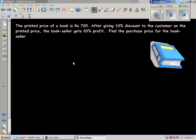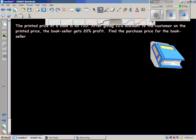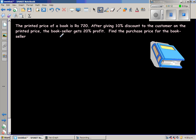The printed price of a book is Rs 720. After giving a 10% discount to the customer on the printed price, the bookseller gets 20% profit. Find the purchase price for the bookseller.